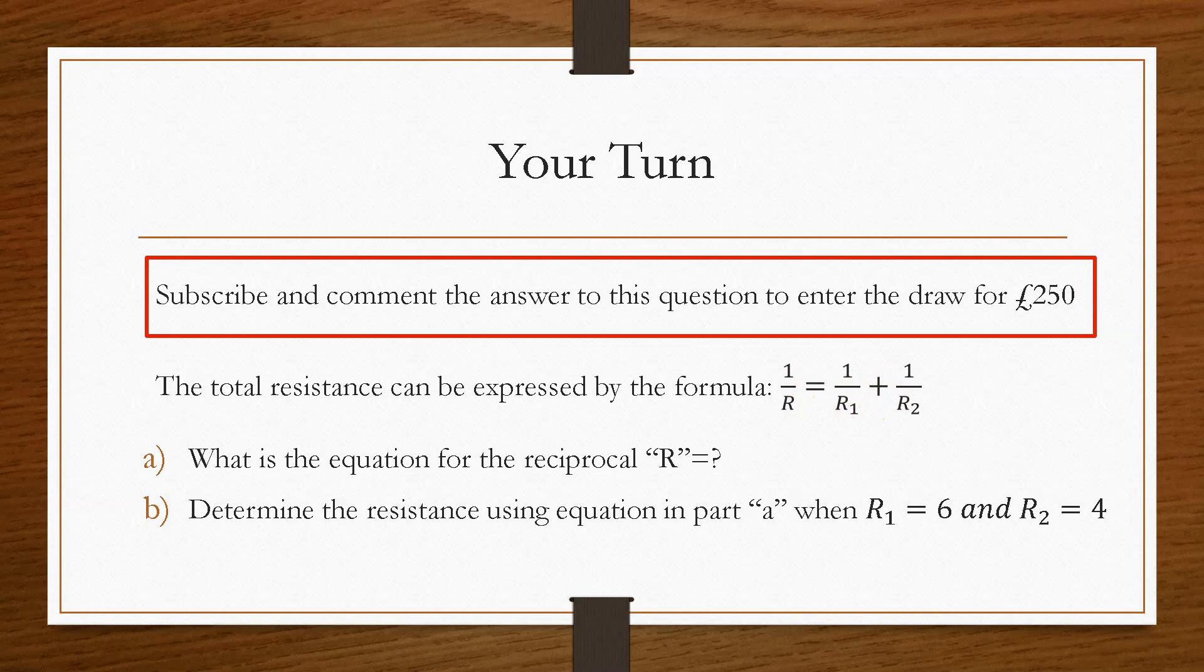And then part b is determine the value of r when r1 and r2 are 6 and 4 respectively. So in your answer, there should be two parts. You should have the formula, which is part a, and then you should have the final answer, numerical answer, in part b.